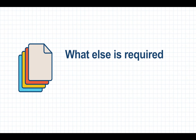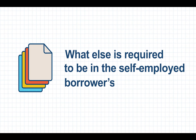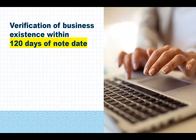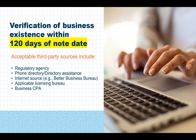What else is required to be in the self-employed borrower's file? The lender is required to verify the existence of the borrower's business within 120 days prior to the note date. Verification should be through an acceptable third party such as a regulatory agency, the phone directory or directory assistance, an internet source, applicable licensing bureau, or the business CPA.